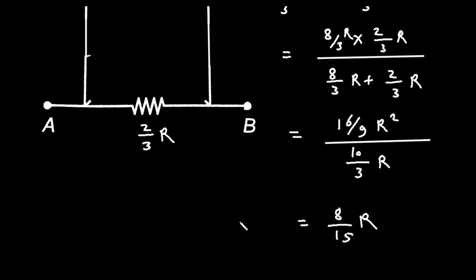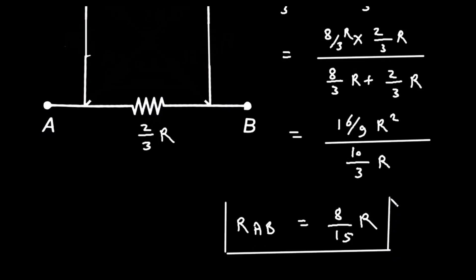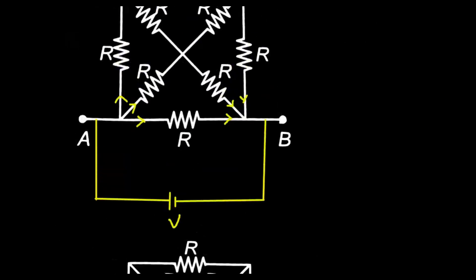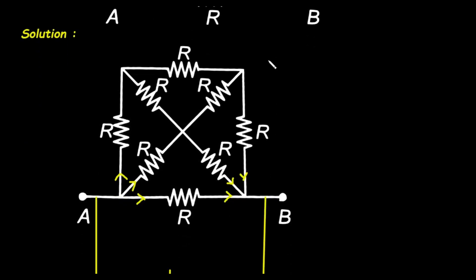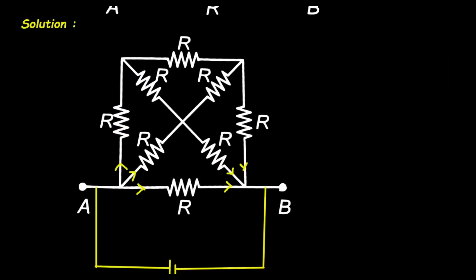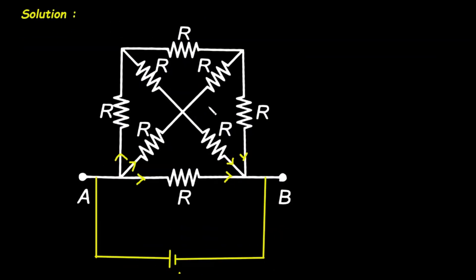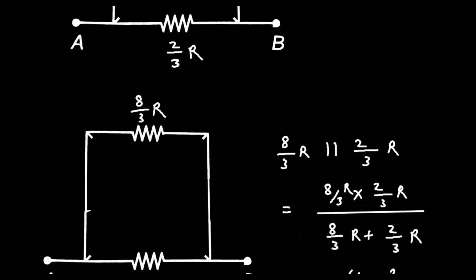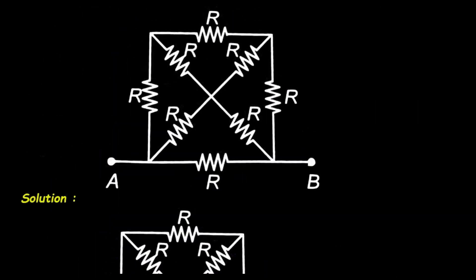So the equivalent resistance R_AB is 8/15 R. And this is how we can solve these types of problems. Remember that we have to separate this part and this part because at this node there will be zero voltage, since the current is the same on both sides.